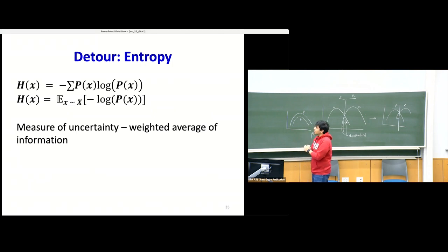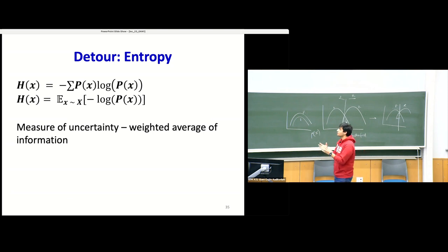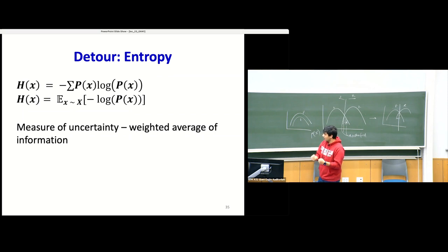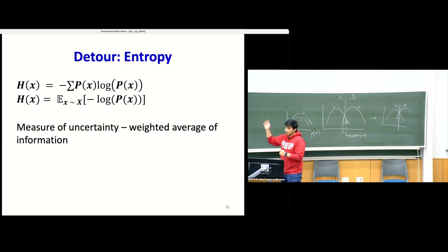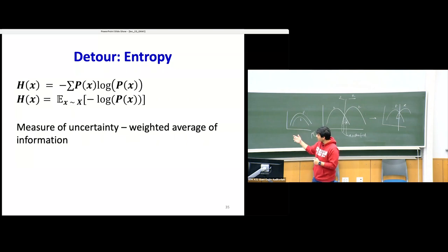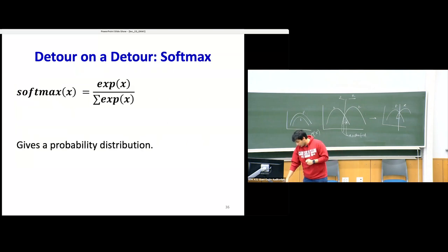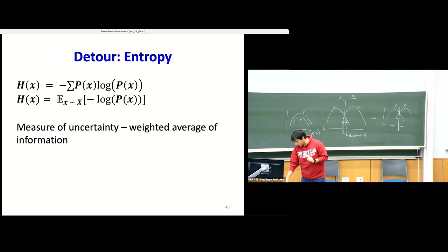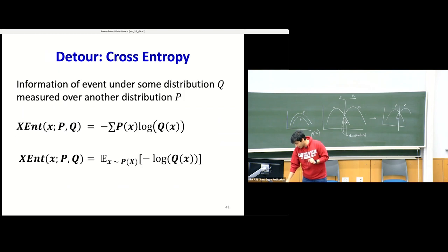What is entropy? Entropy is a weighted average of information content across a bunch of events — it's a measure of uncertainty. The weights are the probabilities of the events happening. And we've all heard of cross entropy: instead of measuring the probability of an event under the same distribution P(x), we measure the probability of event x under two different distributions Q(x) and P(x). This is exactly the loss function we use for classification.